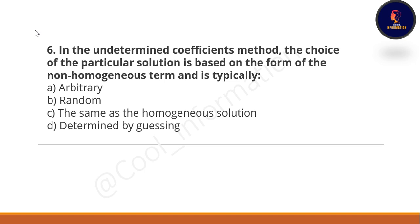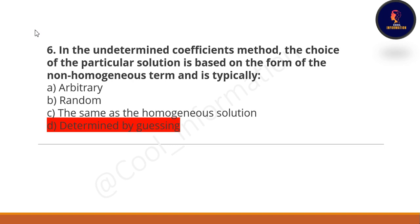Next question: in the undetermined coefficient method, the choice of particular solution is based on the form of the non-homogeneous term and is typically what — arbitrary, random, the same as the homogeneous solution, or determined by guessing? The correct option is determined by guessing.